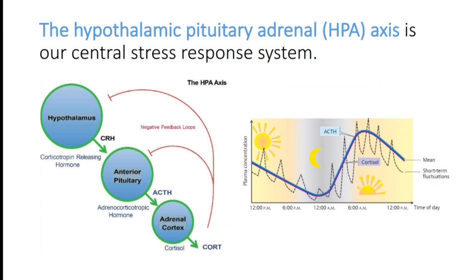Corticosteroids are very widely used in clinical practice. Cortisol is a hormone produced in our body by the adrenal gland. We will see the axis for this secretion of cortisol. It is called the hypothalamic pituitary adrenal or HPA axis. It is controlled by the hypothalamus that produces corticotrophin releasing hormone, which stimulates the anterior pituitary to produce adrenocorticotropic hormone or ACTH, that stimulates the adrenal cortex to produce cortisol. The secretion of cortisol mainly occurs in the early morning hours.